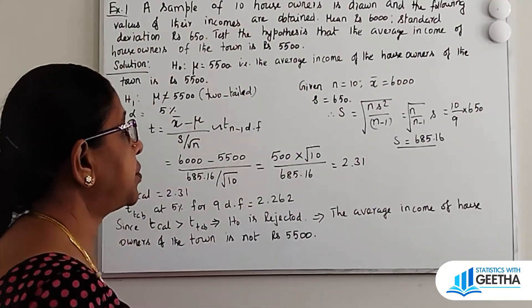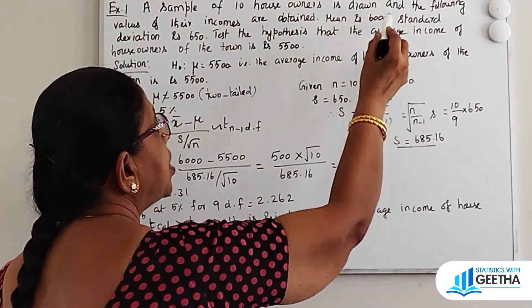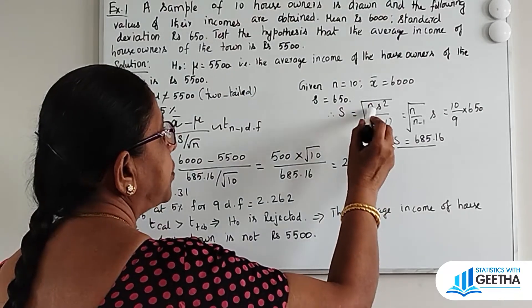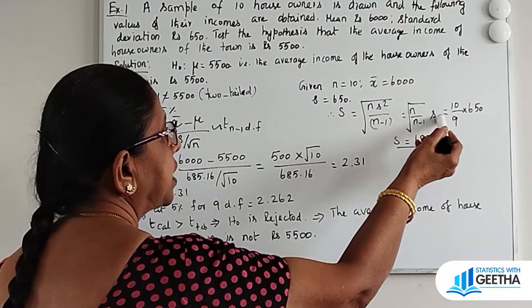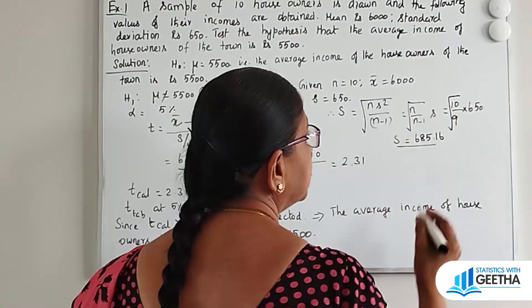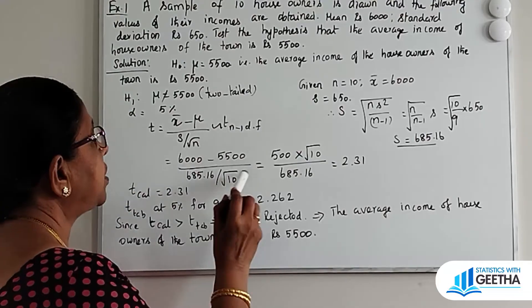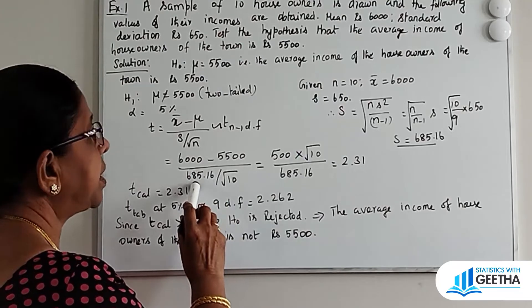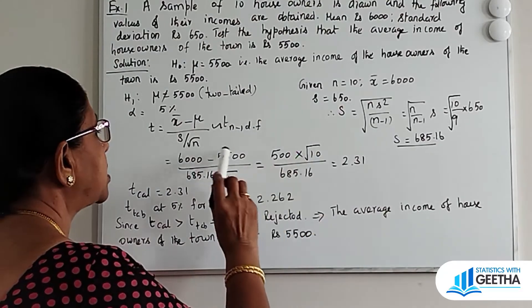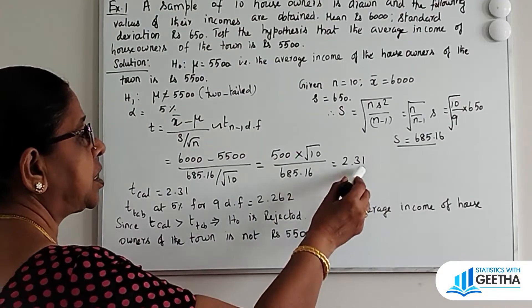T calculated value is X-bar minus mu divided by S by root n, which follows T with n minus 1 degrees of freedom. We have to find capital S: root of n times s squared by n minus 1, that is root of 10 by 9 into 650. After simplification, capital S equals 685.16. Substituting all values: (6,000 minus 5,500) divided by (685.164 divided by root 10), which gives 500 times root 10 by 685.16.